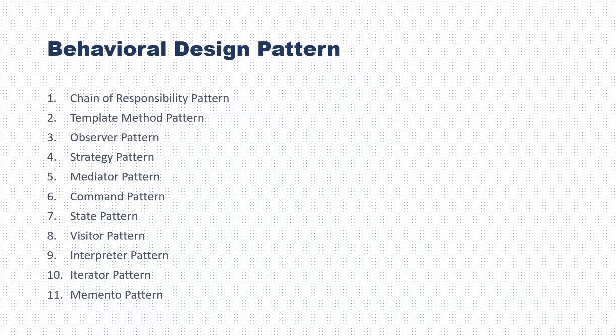The third category is behavioral design patterns. Behavioral design patterns provide solutions for better interaction between objects and how to provide loose coupling and flexibility to extend easily. In other words, this design pattern describes how one class communicates with other classes in a loosely coupled manner. When you have two incompatible interfaces or classes and you want to establish communication between them, this design pattern comes into the picture.